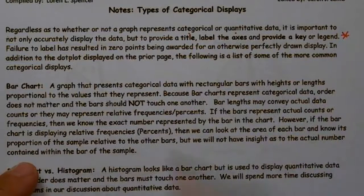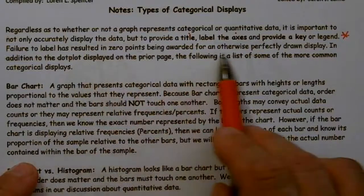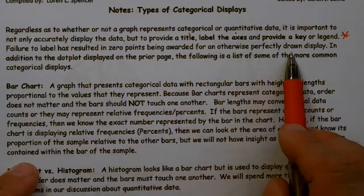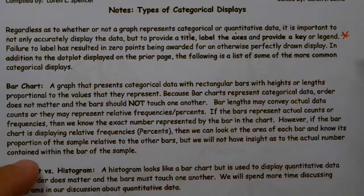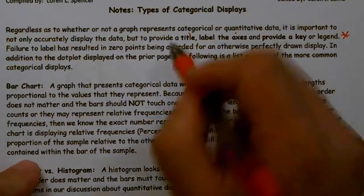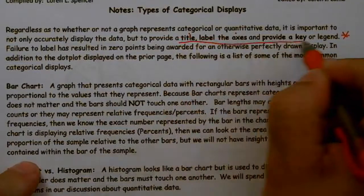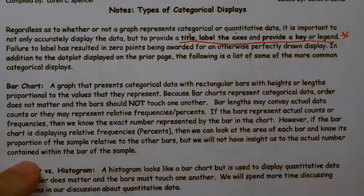Failure to label has resulted in zero points being awarded for otherwise perfectly drawn displays. If you leave off one of those, typically you get half credit. So make sure you're doing all of those — it's extremely, extremely critical, regardless whether you are doing categorical data or quantitative data.